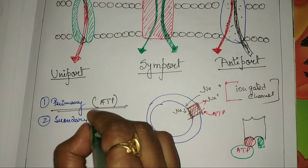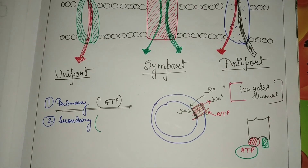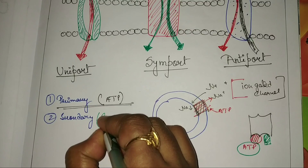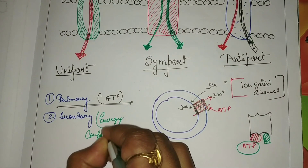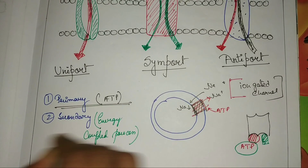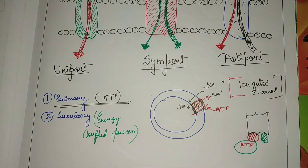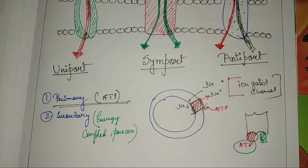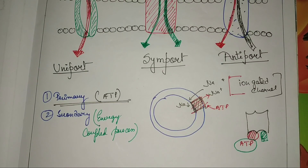What is secondary active transport? Secondary active transport is also known as an energy-coupled process. That means it does not use ATP directly, unlike primary active transport.